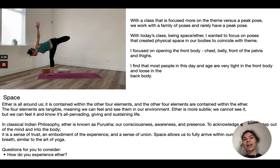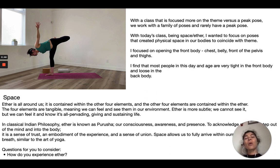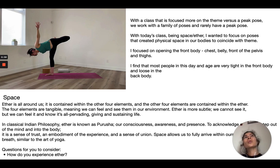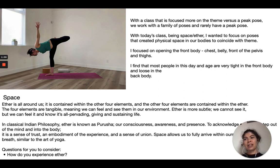Space is the most subtle of the five elements. The first thing I usually do with these kinds of theme-based classes is I write down everything that I know about the theme. From there, I usually do a bit of research either in books or with Google, and I write down anything that speaks to me or feels relevant to what I want to explore. Then I sit with it for a little bit, reading over and allowing myself to ruminate on the theme for a day or two.